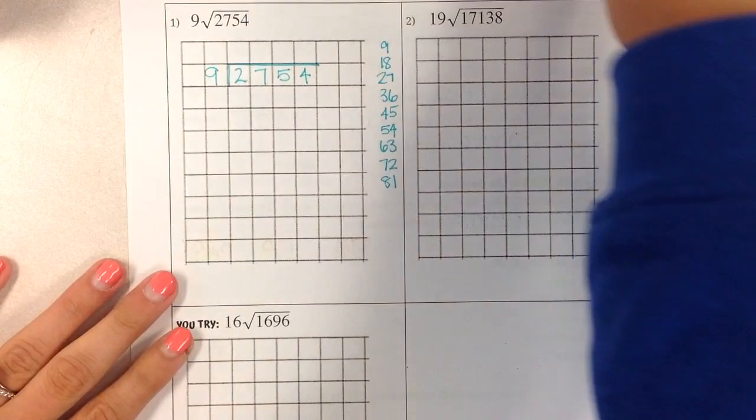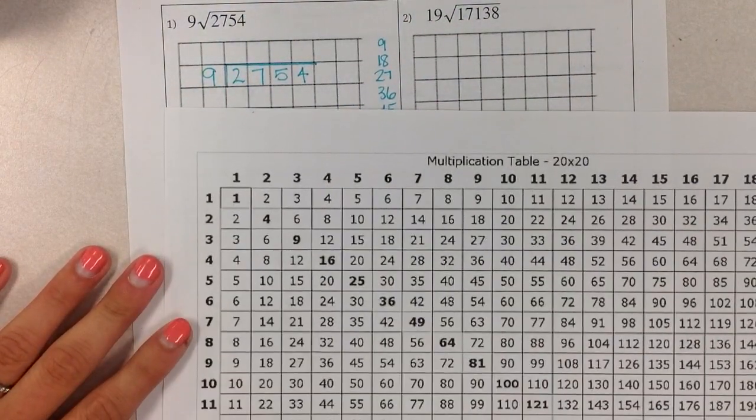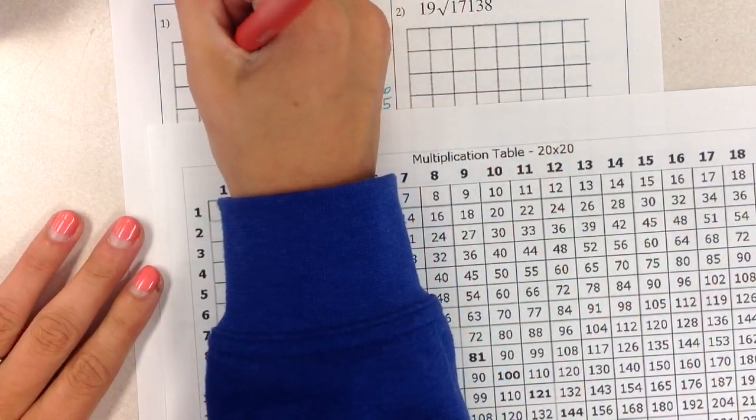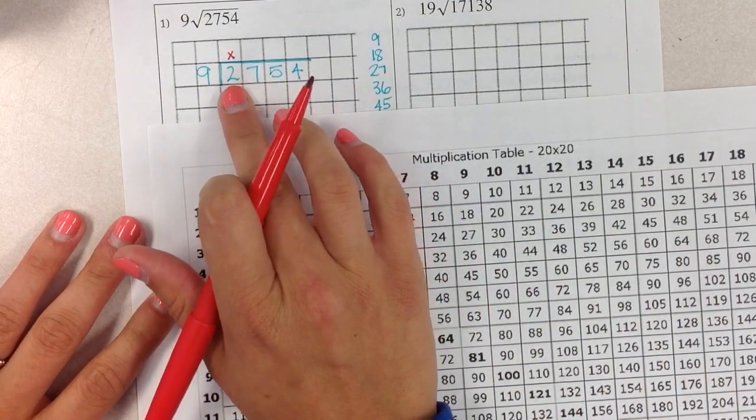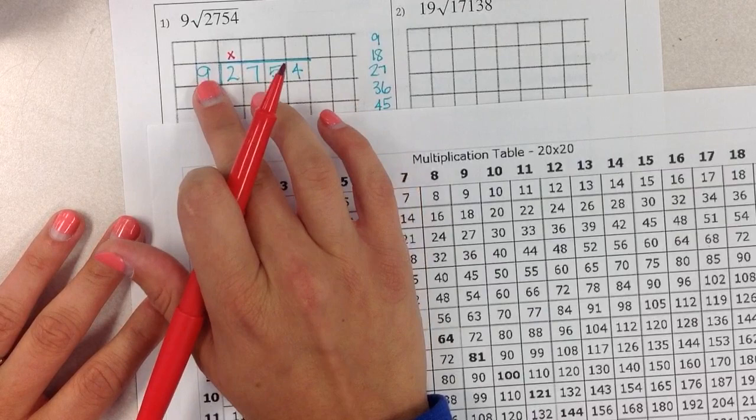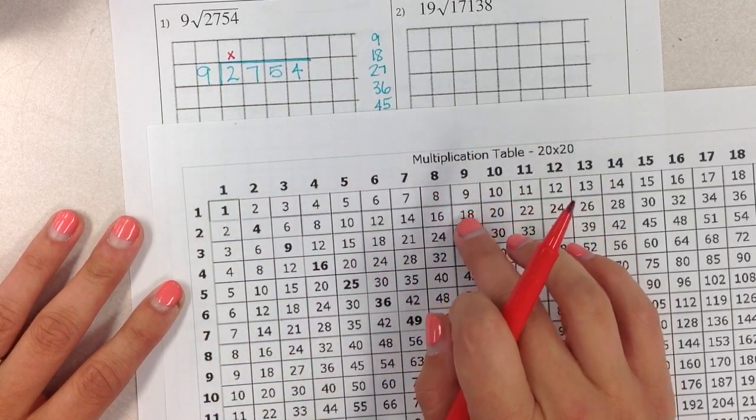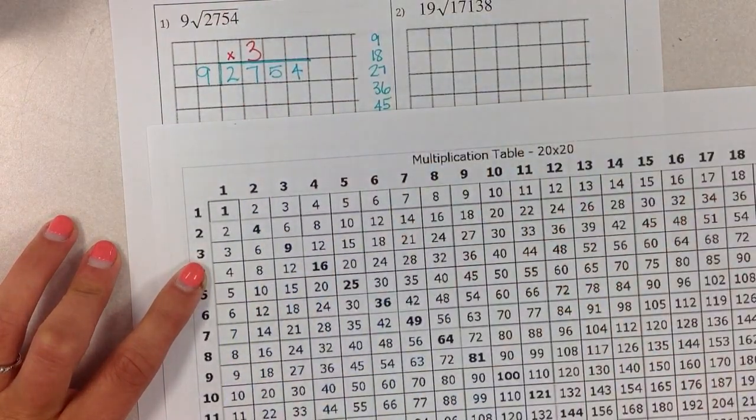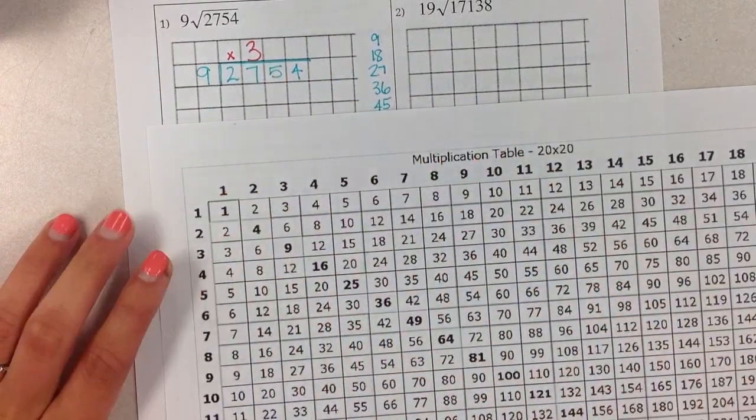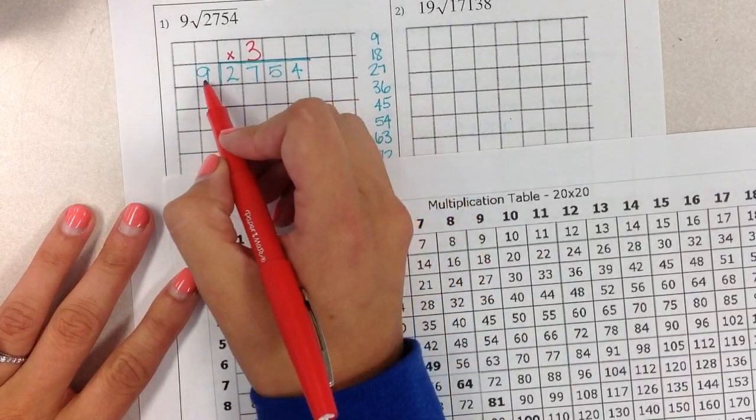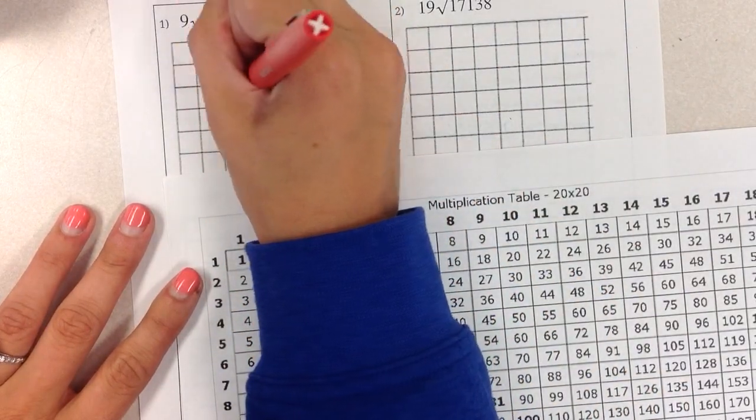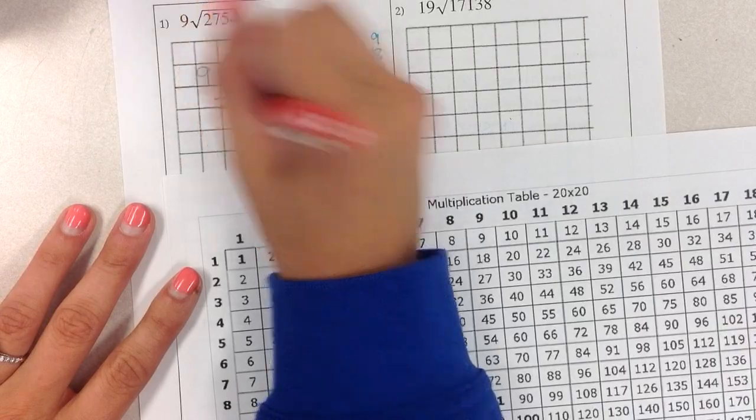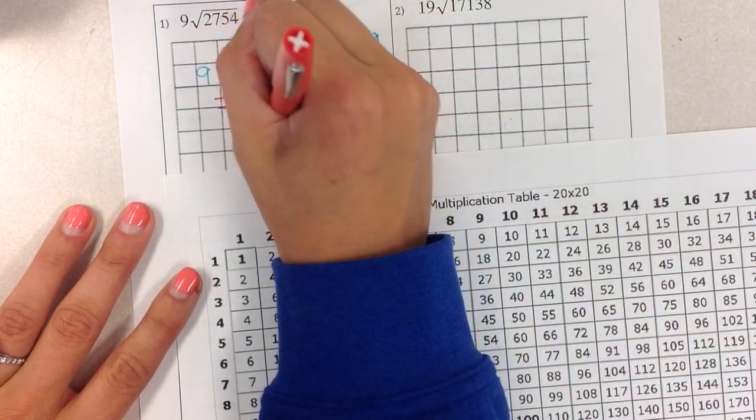So first step is to actually divide. Does 2 divide by 9? Looking on your multiplication chart, does 9 go into 2? Nope, it does not. So I'm going to put an x above the 2. And now we're actually going to use the 2-digit number of 27. Does 27 divide by 9? Does 9 go into 27? Let's look. Yep. 9, 18, 27. 9 goes into 27 three times. So we put our 3 up in our quotient, and now we go to step 2, which is to multiply. 9 times 3 is 27. Step 3 is to subtract. 27 minus 27 is 0. And step 4 is to bring down. So we're going to bring down the 5.